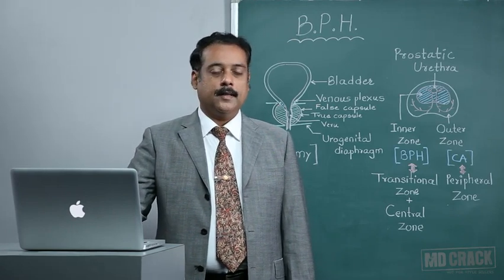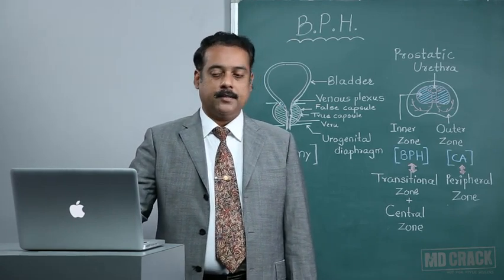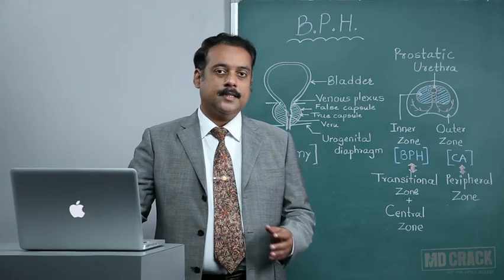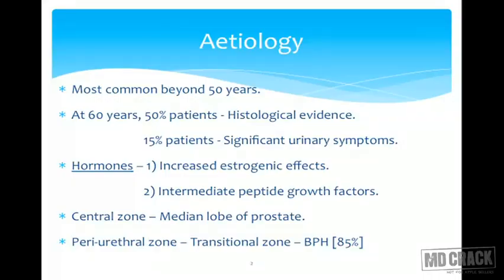First we'll have a look at the etiological factors. This disease is most commonly seen beyond 50 years of age. At 60 years, approximately 50% of patients will have histological, that is microscopic, evidence of this disease. 15% of patients will suffer significant urinary symptoms at this particular age.